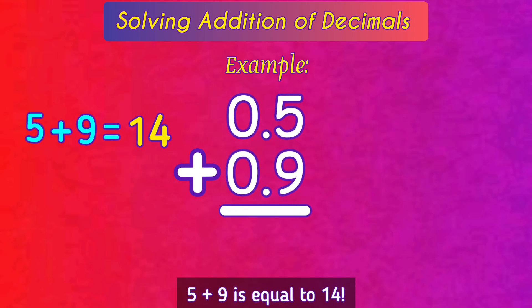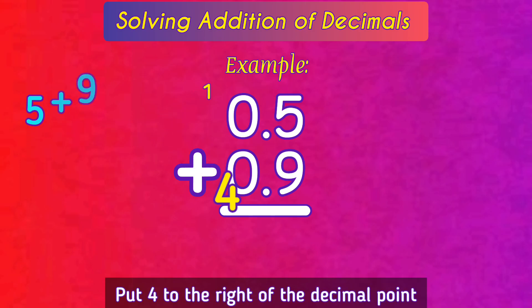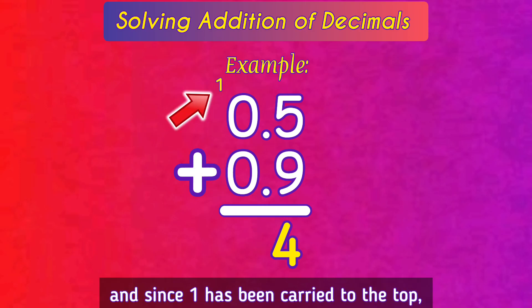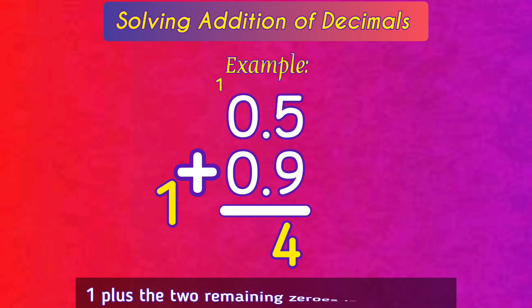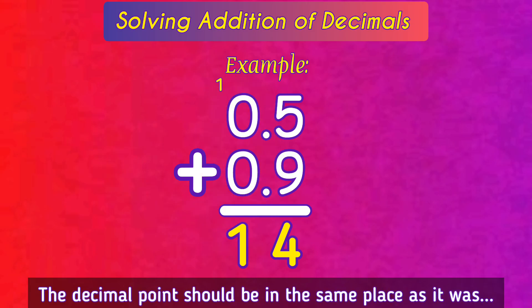5 plus 9 is equal to 14. Put 4, write the decimal point, and since 1 has been carried to the top, 1 plus two zeros is equal to 1. The decimal point should be in the same place as it was. Hence the answer is 1.4.